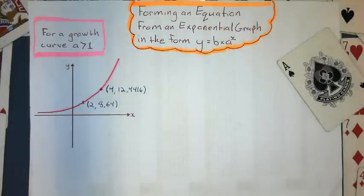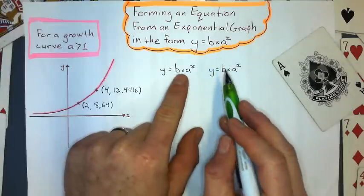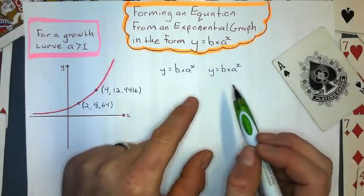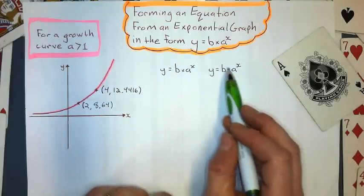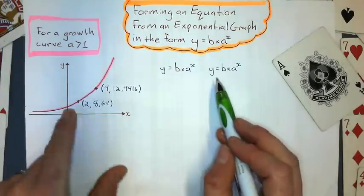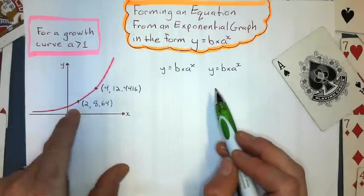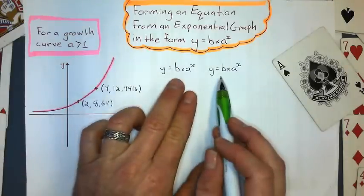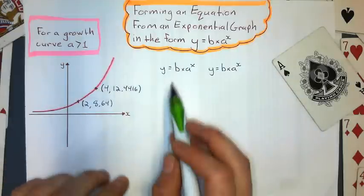So to start off with, I wrote the general form of the equation twice because I'm going to use simultaneous equations to get one equation for the curve. And this is a general form here where b represents the y-intercept, and I don't know what that is just yet. So I'm going to substitute these points into these two equations and see what I get.